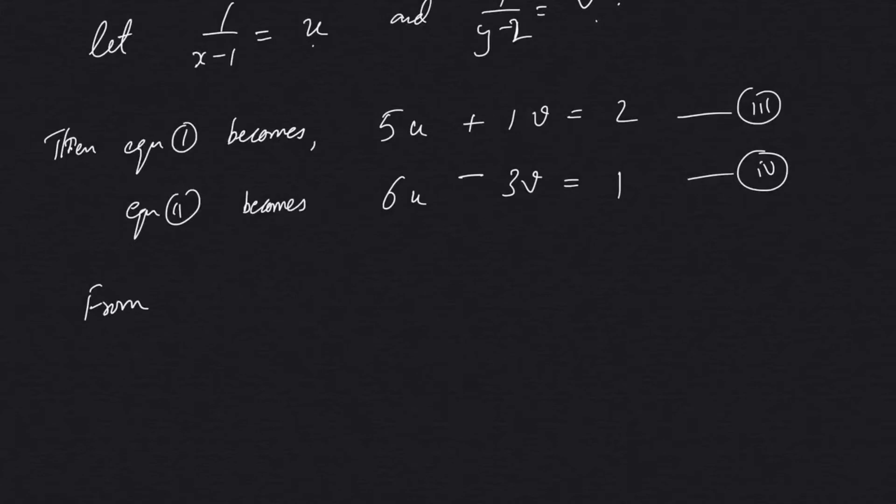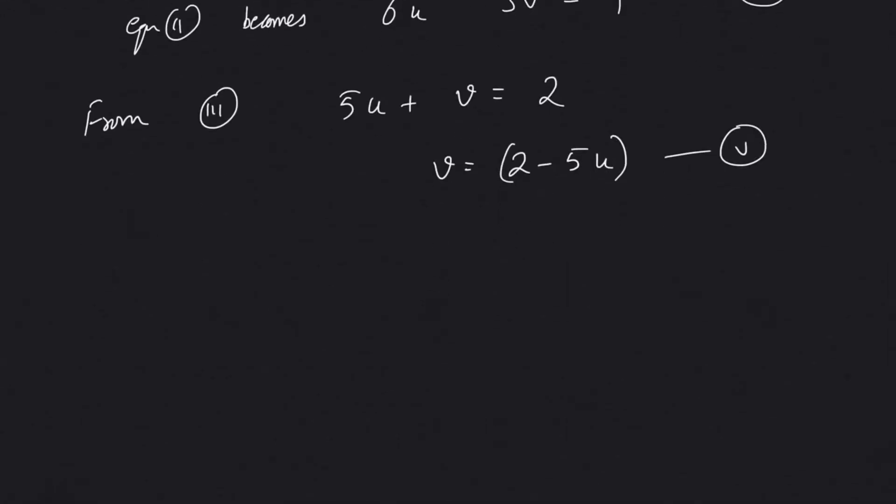Or we can do by substitution method. So from equation 3, 5u plus v equal to 2, so v we can substitute as 2 minus 5u. That can be marked as equation 5.